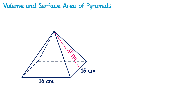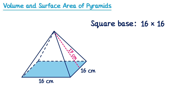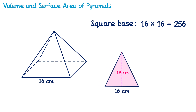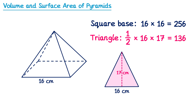That length will be the same on all four triangular faces — so this would also be 17, and so would this, and this, as long as those lines go to the middle of the base of the triangle. To find the surface area, we'll start with the area of the square base: 16 times 16 is 256. Now we'll look at one triangular face. The area of a triangle is one half multiplied by its base, so 16, multiplied by its perpendicular height, which is 17. This gives you 136.